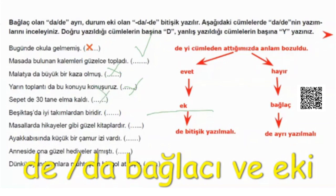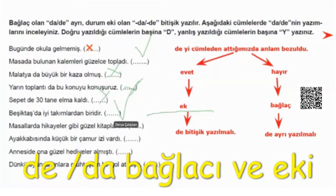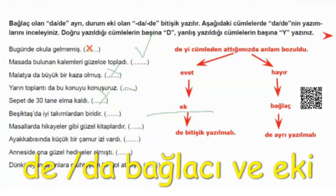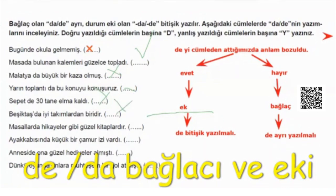Beşiktaş da iyi takımlardan biridir. D ekini attığımızda: Beşiktaş iyi takımlardan biridir. Hocam, anlam bozulmamış. Evet. Ayrı yazılır; bozulmadıysa burada da ayrı yazmış, doğru. Ama kesme işareti var arada; bak işaret var. Dikkat edelim ona. O zaman yanlış hocam. Yani özel isim olunca bitişik yazılacak değil mi? Evet, özel isime geldiği için ayrılmış. Beşiktaş da, ayrı yazması gerekiyor ama işaret kullanılmaz. Çünkü ayrı yazılan bir kelimenin yanına herhangi bir kesme işareti konur mu? Hayır, konmaz değil mi? Yani demek ki orayı kesmiş. Kesme işareti var ya. Devam edelim.